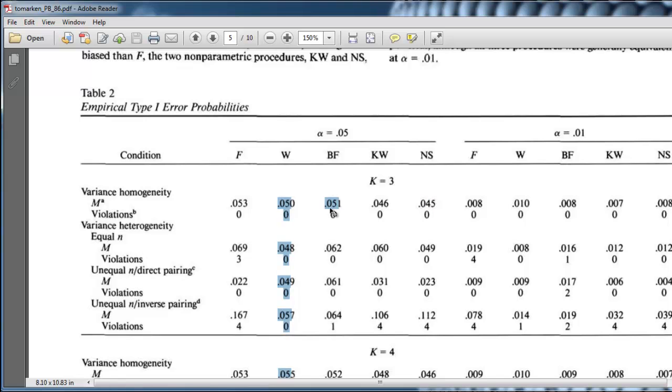So, what is an interesting observation here is that if the regular ANOVA protects you roughly at 0.05, with variance homogeneity satisfied and sample sizes are equal, and the Brown Forsyth and the Welch test do as well,